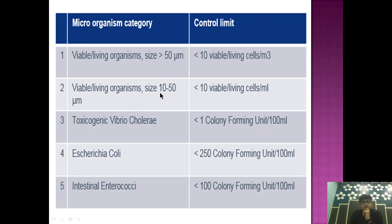If the size is 10 to 50 micrometers, it should contain less than 10 viable microorganisms per milliliter. Apart from size, it also talks about certain bacteria or fungi like toxicogenic Vibrio cholerae. It should be less than 1 CFU — colony forming unit — per 100 ml. The fourth category should be less than 250 CFU per 100 ml, and the fifth should be less than 100 CFU per 100 ml. Through this chart, I want to show how, depending upon size and type, the bacteria segregation has been carried out.